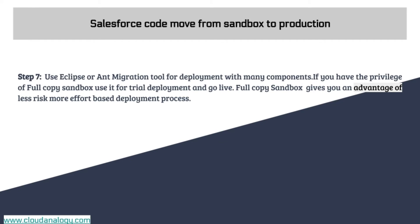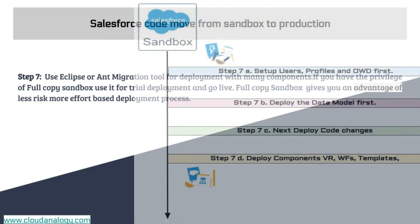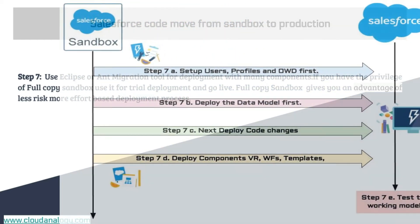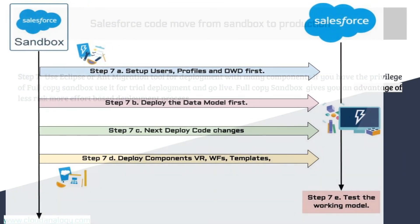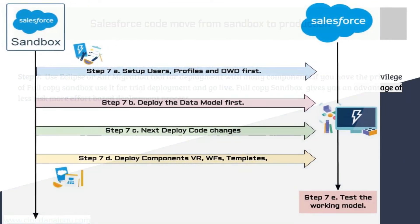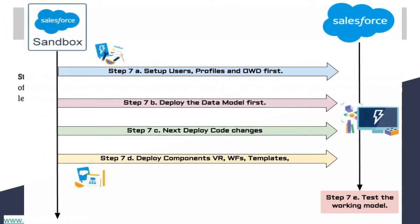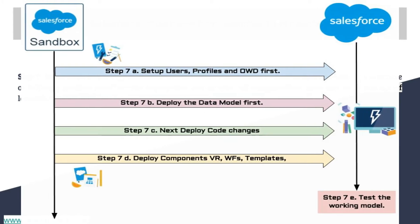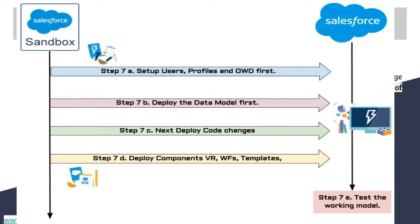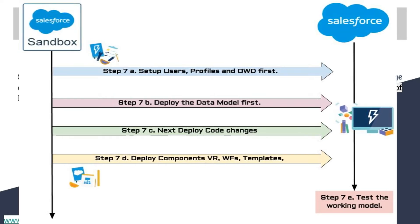Step seven, defined in several smaller sub-steps, is the deployment order strategy. The first sub-step is to move users, profiles, and other items that form the company details. The second sub-step is the data model — after moving users, profiles, and OWD, move the data model. After moving the data model, you may also need to revisit OWD organization-wide defaults. Having profiles and users before the data model is a good practice.